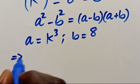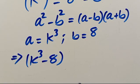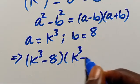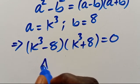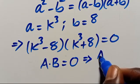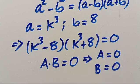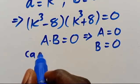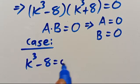From the difference of squares, our a equals k to the power of 3 and b equals 8. Substituting, we get k cubed minus 8 times k cubed plus 8 equals zero. Since a times b equals zero, either a equals zero or b equals zero. So we take Case 1: k cubed minus 8 equals zero.